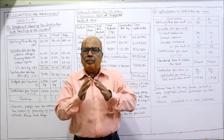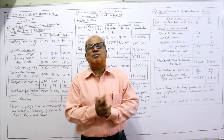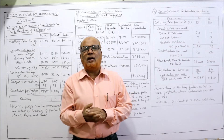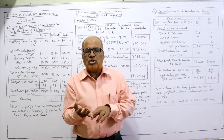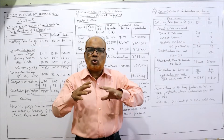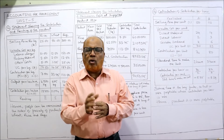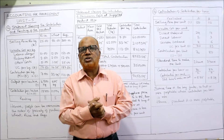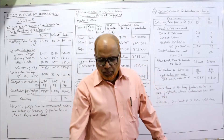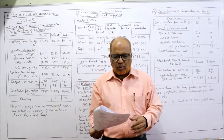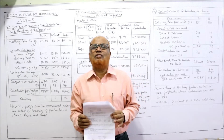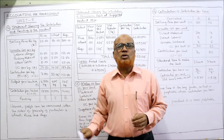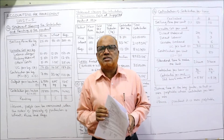All the problems are based on formulas. Without knowing the formula you cannot understand the problems. My suggestion: be clear about the concepts used in CVP analysis and the formulas applied to find out the PV ratio, margin of safety, contribution, break-even points — so many formulas are there. While watching the video, always note down the formulas and make all the calculations. I expect my viewers to have a printout of the problems given in the link under my description.